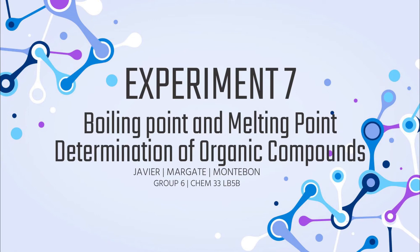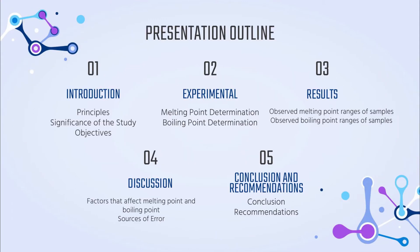Good afternoon, we are Group 6 and we will be presenting Experiment 7: Boiling Point and Melting Point Determination of Organic Compounds. Our presentation outline includes the introduction, comprised of the principles, significance of the study, and the objectives. Second would be the experimental, discussing the melting point and boiling point determination methods, followed by the results, the discussion, and lastly, the conclusion and recommendations.